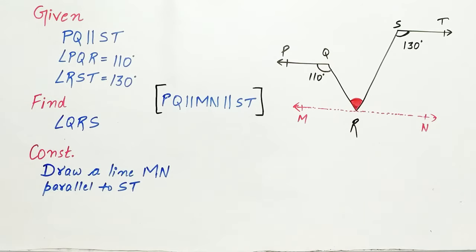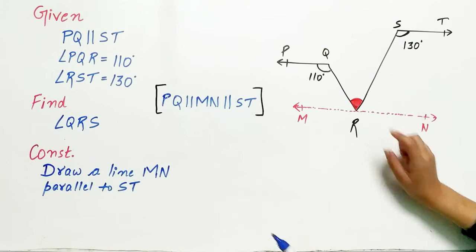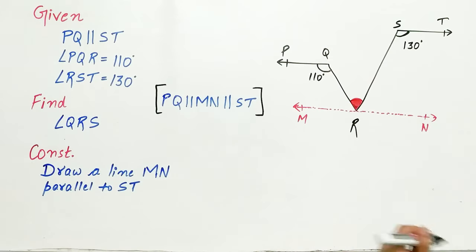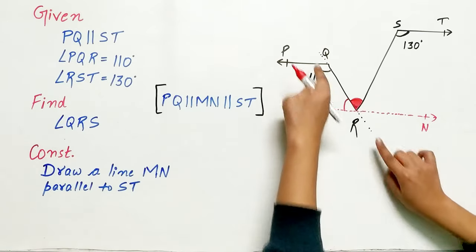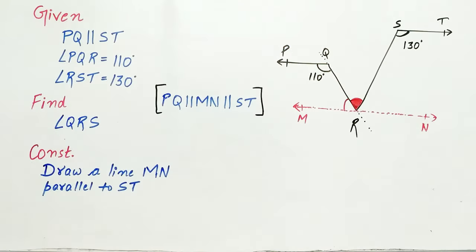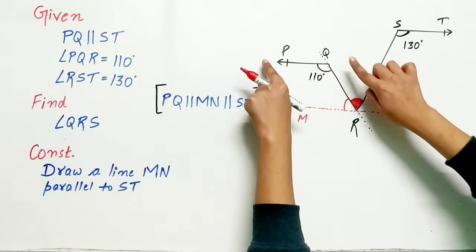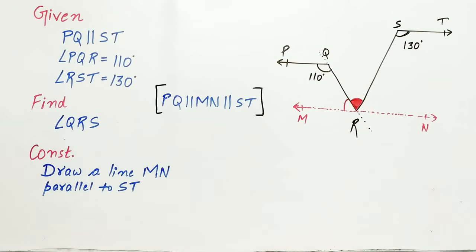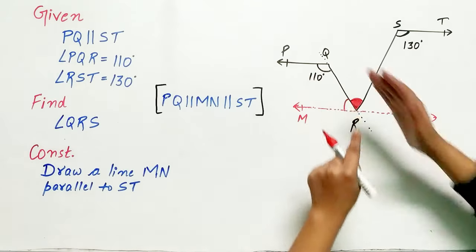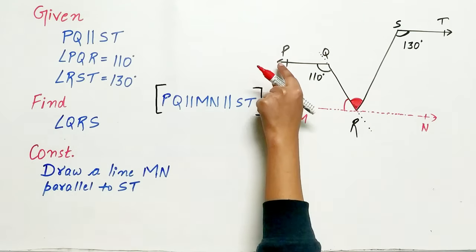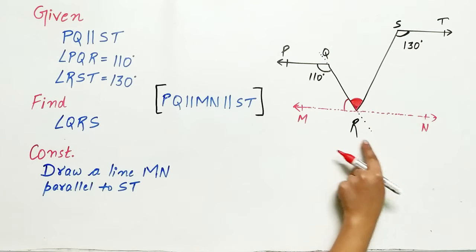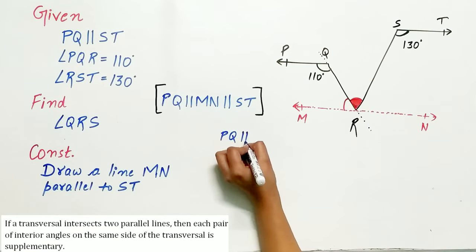Now let's find angle QRS. PQ is parallel to MN, we know that. QR is a transversal because it intersects line PQ and MN. Theorem 6.4 says if a transversal intersects two parallel lines, then each pair of interior angles on the same side of the transversal are supplementary.